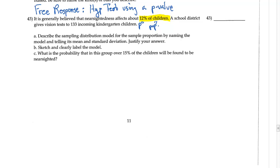A school district gives vision tests to 133 incoming kindergarten children, so 133 then is my sample size n. Now what we want to do is describe the sampling distribution model for the sample proportion by naming the model and telling its mean and standard deviation.